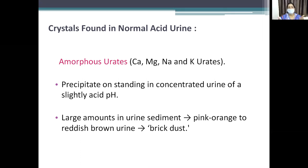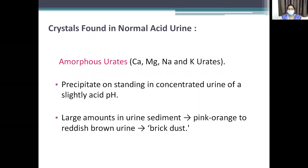Crystals in acid urine include: uric acid crystals, cysteine crystals, calcium oxalate crystals, and tyrosine crystals. Crystals in alkaline urine include: triple phosphate crystals (the main ones), dicalcium phosphate crystals, calcium carbonate crystals, and others. When reading a crystal, note: the pH at which it appears, whether it is radiopaque or radiolucent, and its shape.